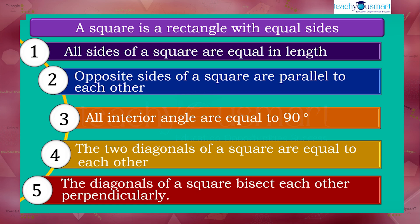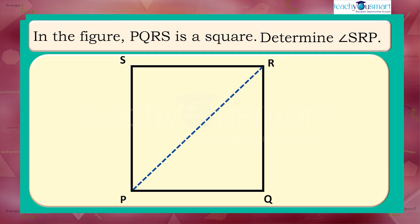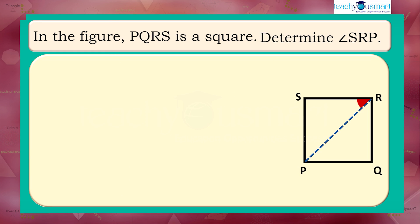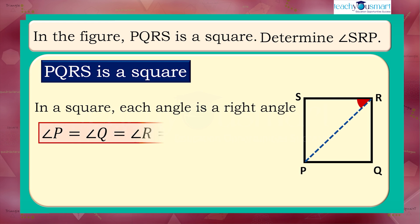Let's see how we can apply these properties to solve problems. In the figure, PQRS is a square. Determine angle SRP. Given that PQRS is a square, we have to determine the measure of angle SRP. We know that in a square, each angle is a right angle. That is, angle P equals angle Q equals angle R equals angle S equals 90 degrees.